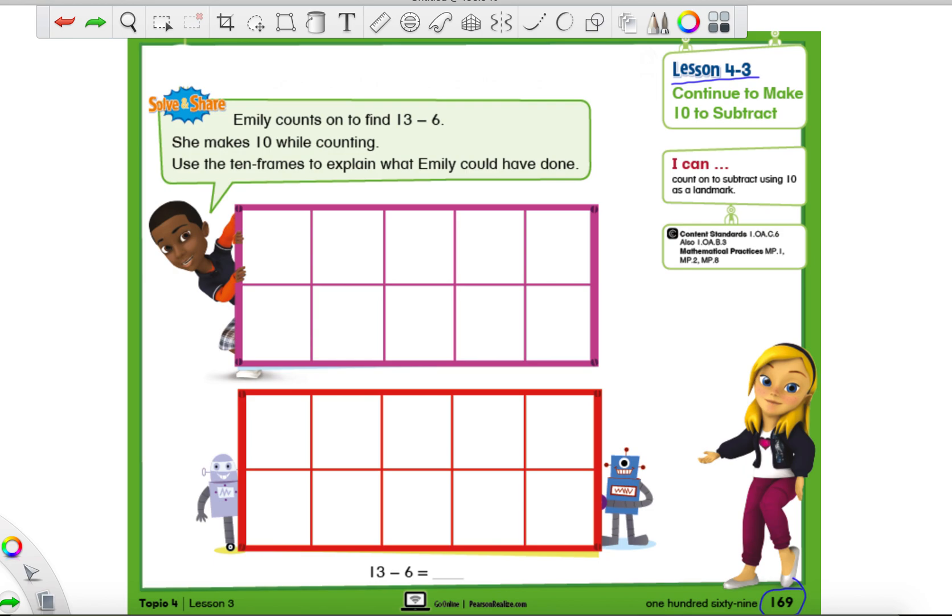We're going to be working with some related facts. Now a related fact is when you see a subtraction sentence, right? Maybe I'll do an easy one. Maybe we have 4-2 and we don't know what it is. I know you guys know what it is, but just hold on. A related fact will use the same two numbers. We could say 2 plus some number equals 4. And the same number will fit in both spots.